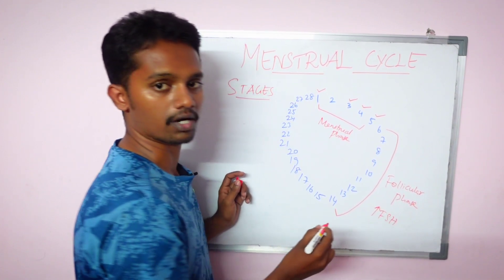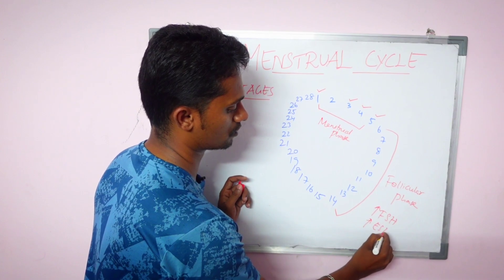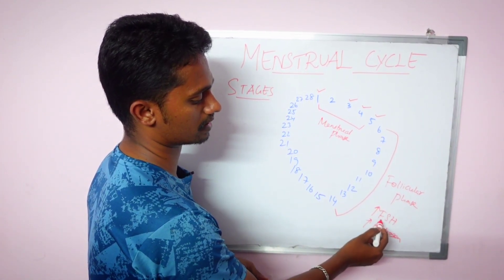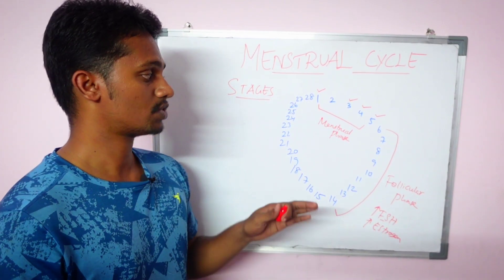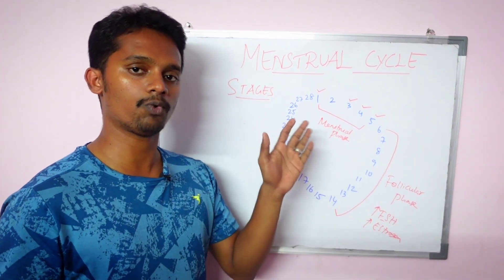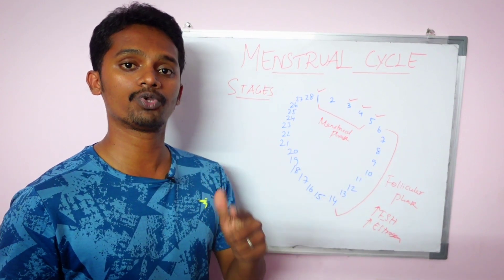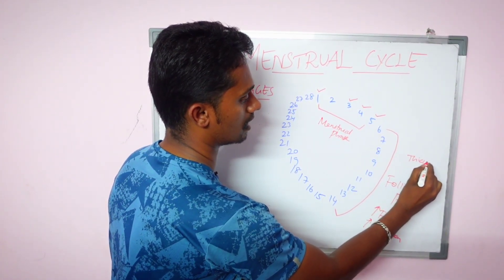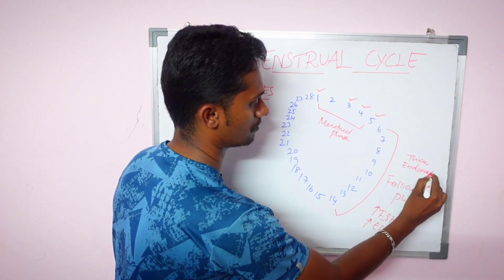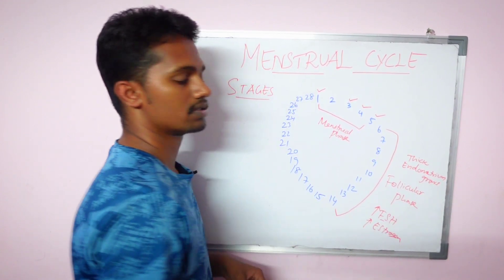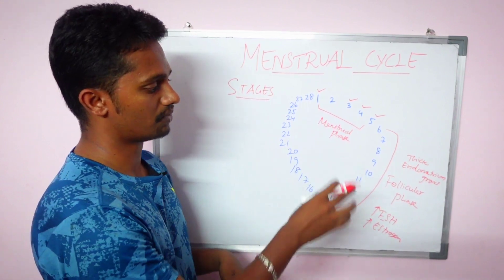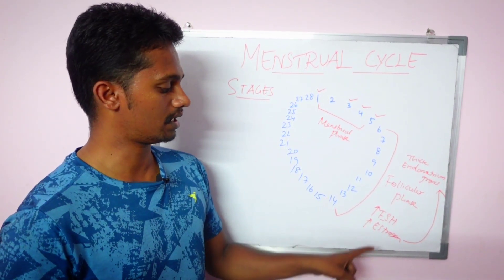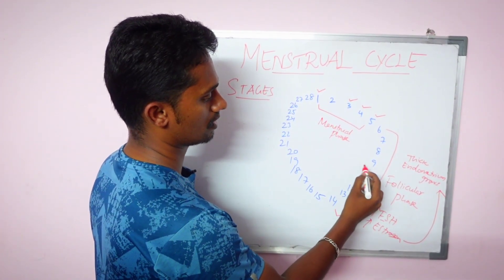In the follicular phase, FSH — the follicle-stimulating hormone — is active. Estrogen levels begin to rise. The endometrium starts to grow and become thick. Estrogen helps this phase by stimulating the thickening of the endometrium. By the end of this phase, the estrogen level reaches its peak. This is the follicular phase, running from day 6 to day 14.